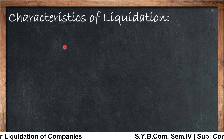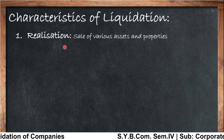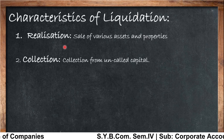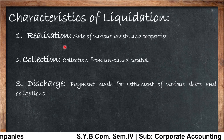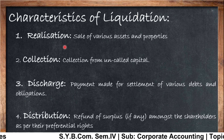Here are some characteristics of liquidation. The first one is realization — the liquidator has to sell various assets and properties and collect the amount. The second is collection from called-up capital if any. The third is discharge — he has to make all payments for settlement of various debts and obligations. Finally, distribution means refund of surplus, if any, among the shareholders.